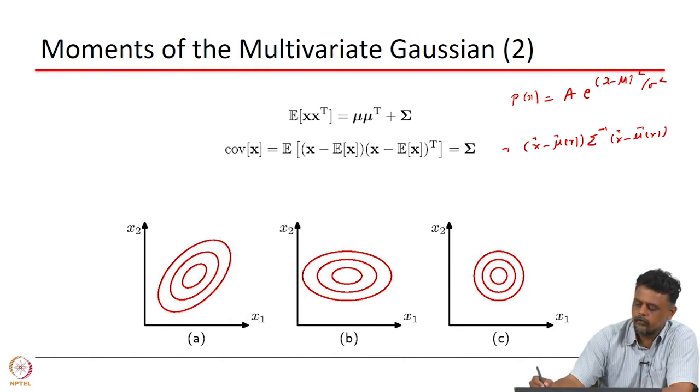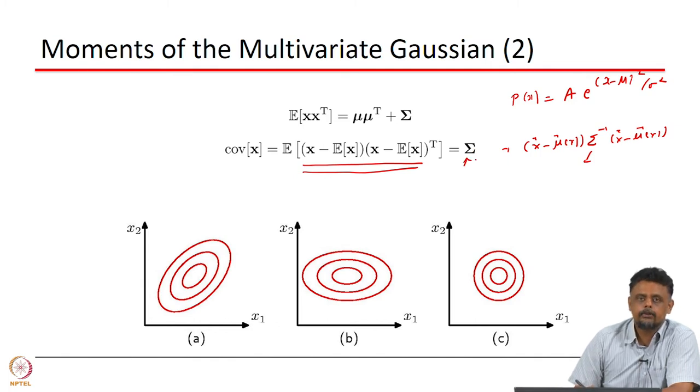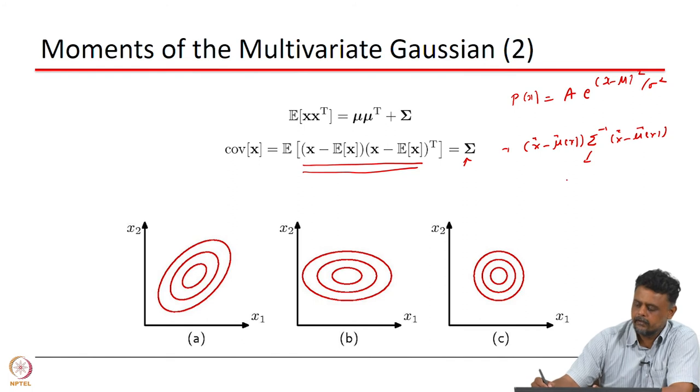Now if you take this covariance matrix, it is defined as the expectation of this quantity. If you have capital D dimensions, then if x is a D-dimensional variable, the covariance matrix is D cross D elements.